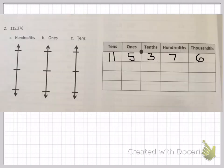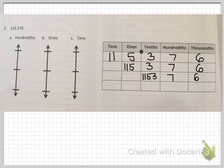Now we're on to problem two. We're going to be doing the same thing, but with the number one hundred and fifteen and three hundred and seventy-six thousandths. I've already filled in our place value chart. As you can see, they didn't give us a hundreds place on the chart, so I had to put in eleven tens, five ones, three tenths, seven hundredths, and six thousandths. I continued on to do one hundred and fifteen ones, three tenths, seven hundredths, and six thousandths. Then one thousand one hundred and fifty-three tenths, seven hundredths, and six thousandths. Finally, eleven thousand five hundred and thirty-seven hundredths and six thousandths. Doing this helps you set up your vertical number lines — that's why we do the place value chart.